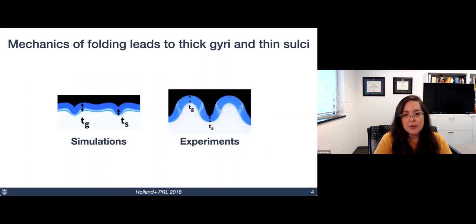In graduate school, I published a paper showing that the mechanics of folding itself actually leads to these thick gyrae and thin sulci. So even in simulations and experiments that we did with no source of biological heterogeneity, we naturally saw this emergence of thick gyrae and thin sulci.